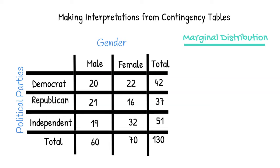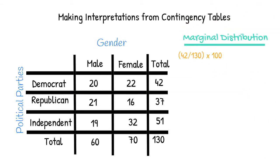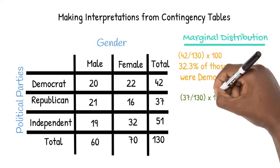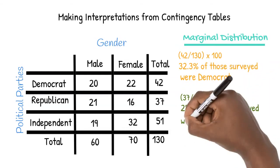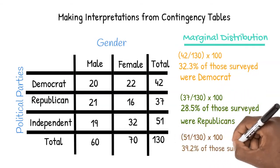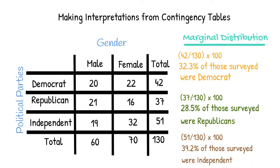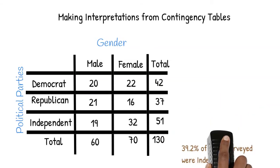Looking at the margin on the right, we see that 42 people out of 130 people overall were Democrat. We multiply that by 100 to see that 32.3% of those surveyed were Democrat. 37 out of 130 people were Republican — 28.5% of those surveyed were Republican. 51 out of 130 people were Independent — 39.2% of those surveyed were Independent.